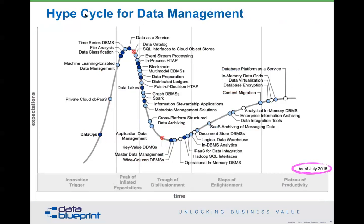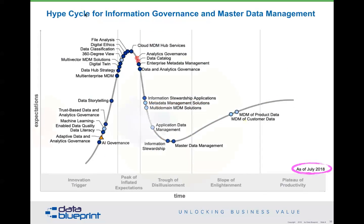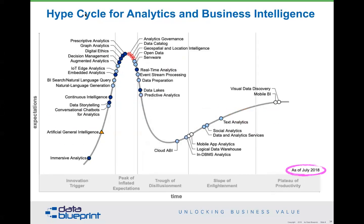The hype cycle for data management as of July 2018: data as a service was at the top and about to fall. Master data management was at the trough of disillusionment. Data-based platforms as a service is fairly mature. Machine learning is just on the ascending curve — we are just getting started. Metadata management solutions have fallen off the top. MDM of product and customer data is looking pretty mature. You should find these Gartner hype cycles as you're looking at technology — they'd like you to pay for them, but they can be found.